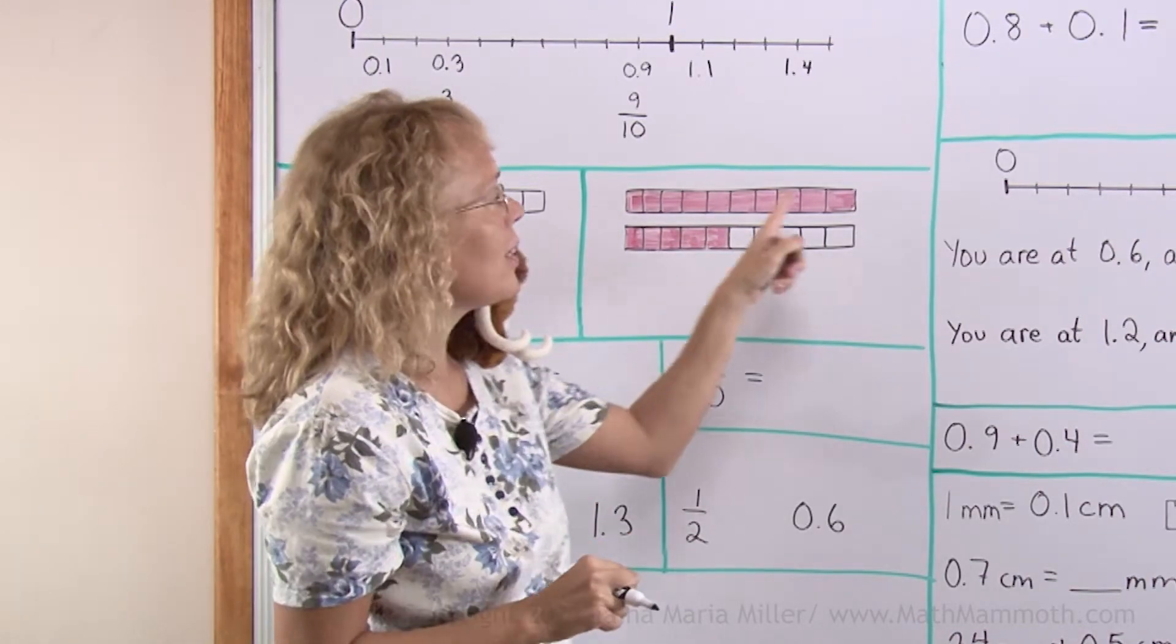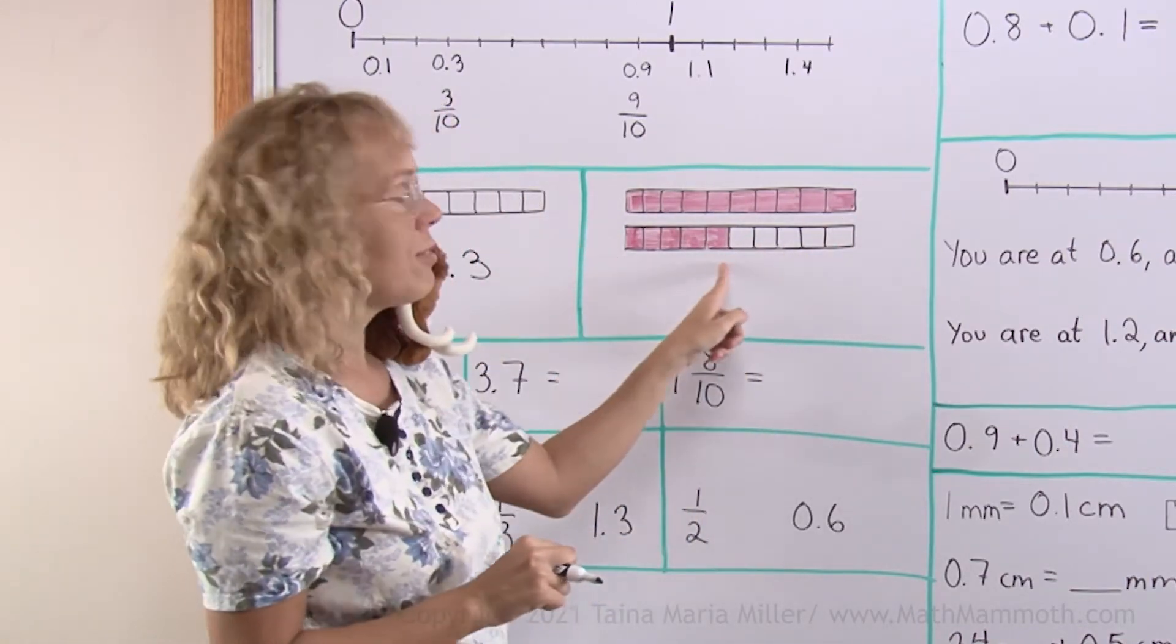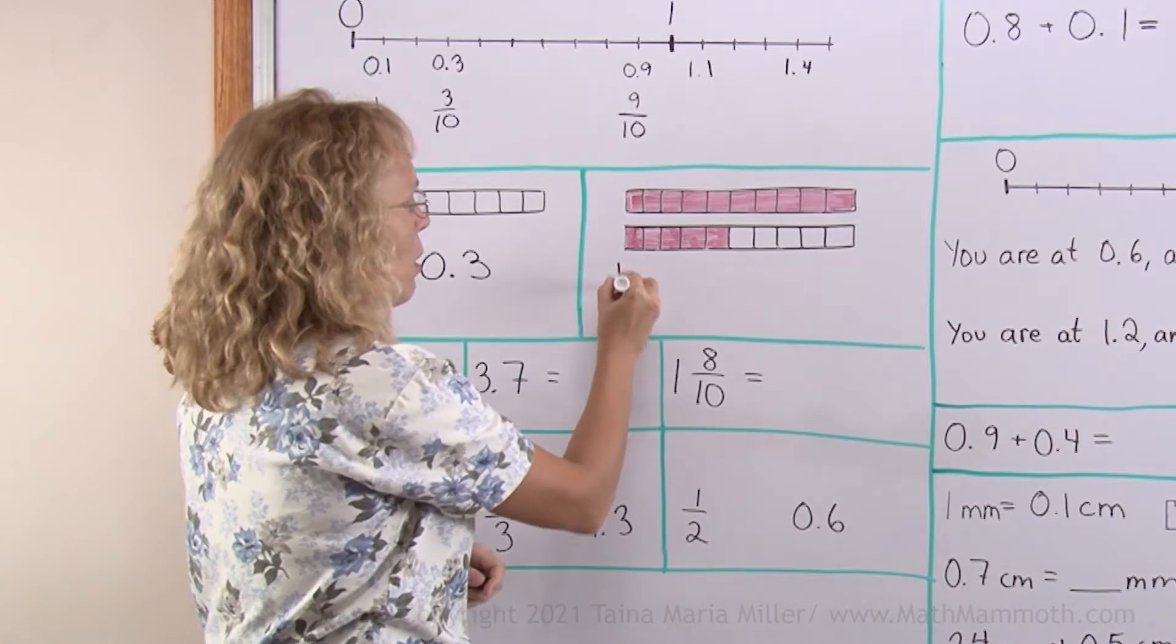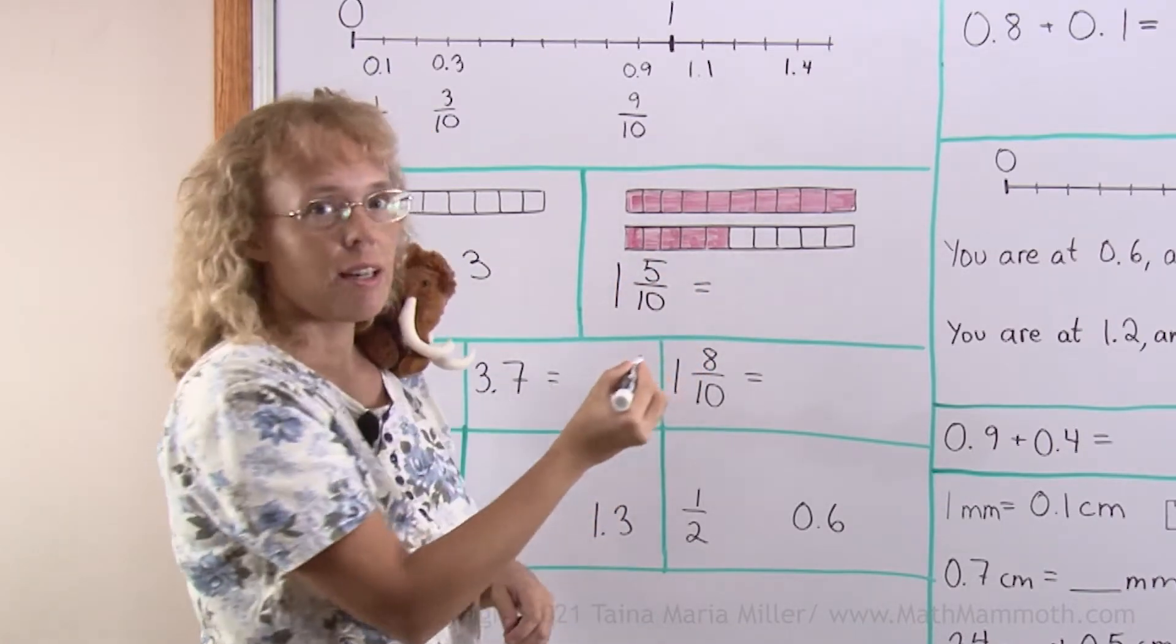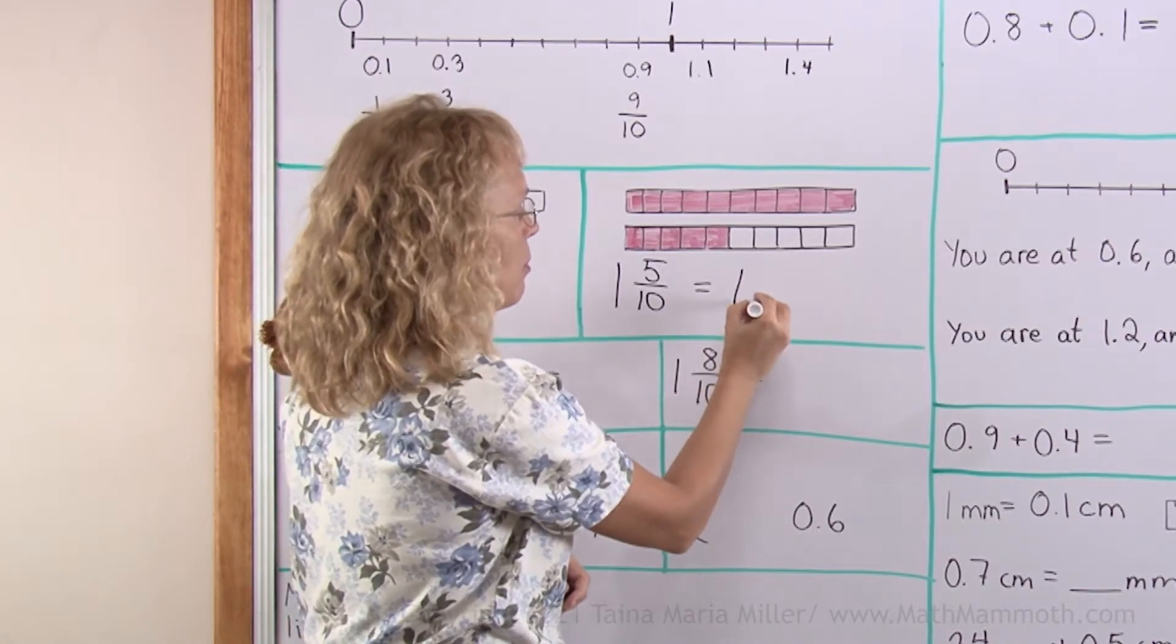Now this model has 1 whole and then 5 tenths. So 1 and 5/10. As a decimal I write 1.5.